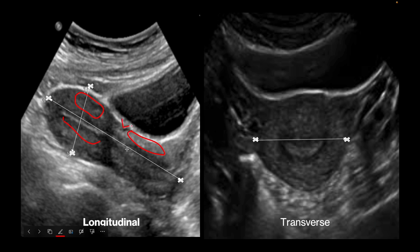The cervix usually lacks this central line, which may help to differentiate between the uterine body and cervix. We often find angulation between the uterine body and cervix, and this angulation sometimes helps to differentiate them. In the reproductive stage, the ratio of the length of the uterine body to that of the cervix is almost 2:1.